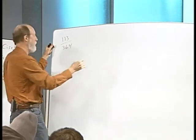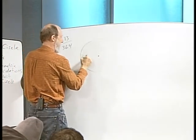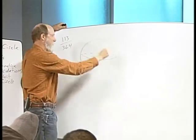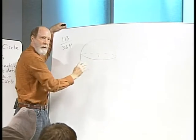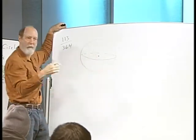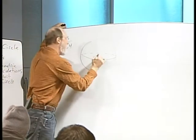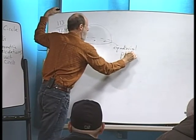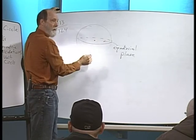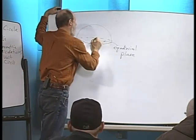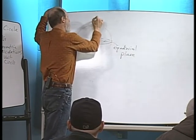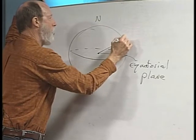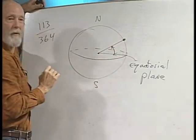How fast would you have to travel on the surface of the earth at the equator to keep up with the sun, so that the sun would appear to remain in the same position in the sky? If I draw a picture of the earth with us down on the equator - this is called the equatorial plane, passing right through the center of the earth. If you measure an angle above that equator into the northern hemisphere, that angle of measure is called latitude.